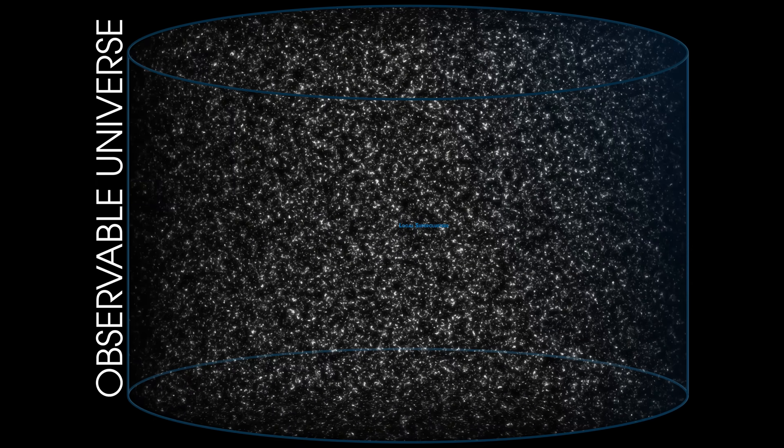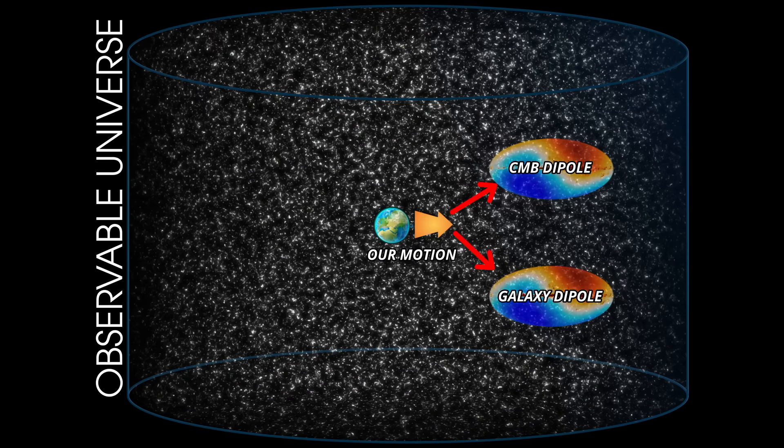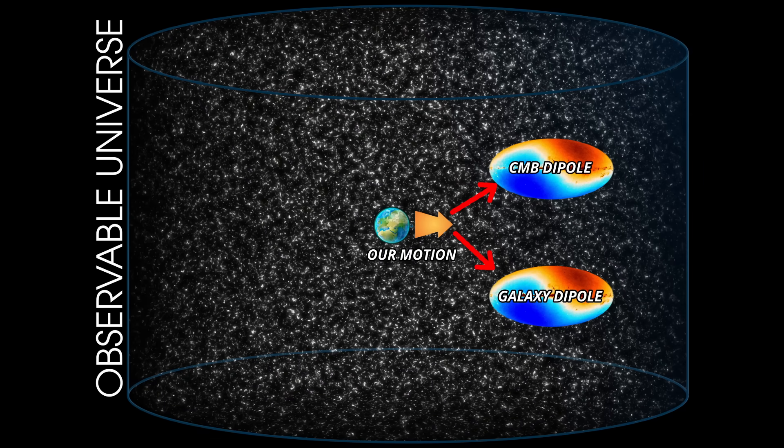And by isotropic, cosmologists don't just mean it looks the same everywhere. They mean that if you zoom out far enough, the distribution of matter shouldn't have any preferred direction. No enormous density gradients, no giant flows, no special patches of sky where galaxies behave differently. And because of that assumed isotropy, the random motions of individual galaxies, their little peculiar motions, should average out when you look at millions of them spread across the sky. What remains should be the same global motion we see in the CMB.